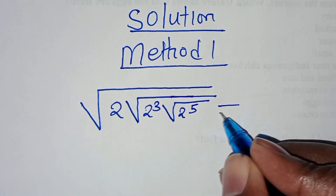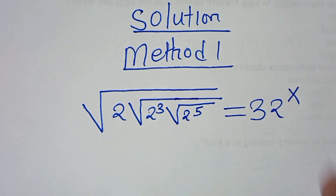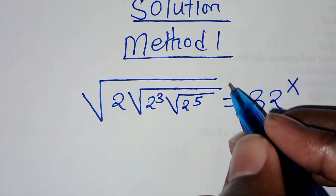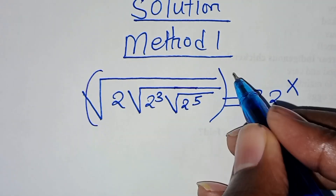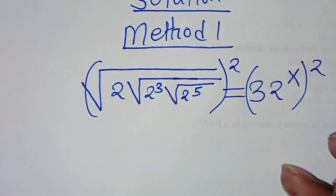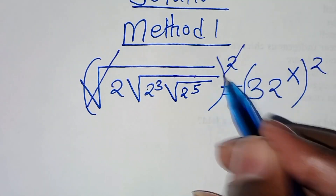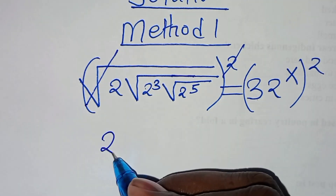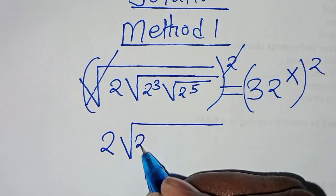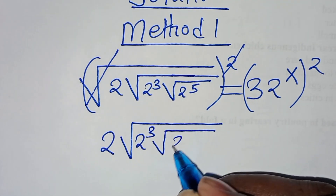This is equal to 32 raised to the power of x. The first step here is to square both sides, so that we eliminate the first square root sign, so that we have 2 times square root of 2 to the power of 3 times square root of 2 to the power of 5.